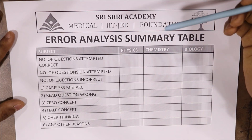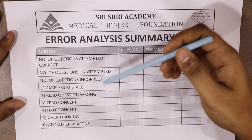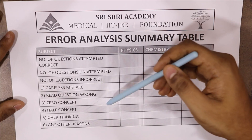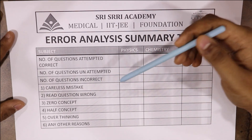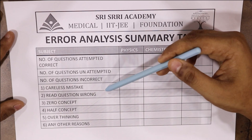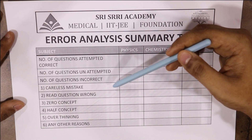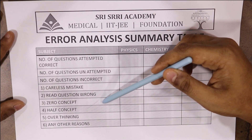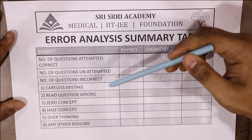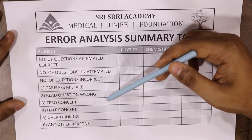After every test, you fill in this sheet and you can analyze yourself with the number of questions in each category. For example, if careless mistakes are high, it means you are not attentive enough in the exam and you need to be more attentive. If you are reading questions wrong, it is the same thing — you need to pay more attention to reading. This way, you will know where to focus your efforts. Zero concept is actually better compared to other mistakes, because you simply do not know the concept yet and you can read it anytime and learn it.